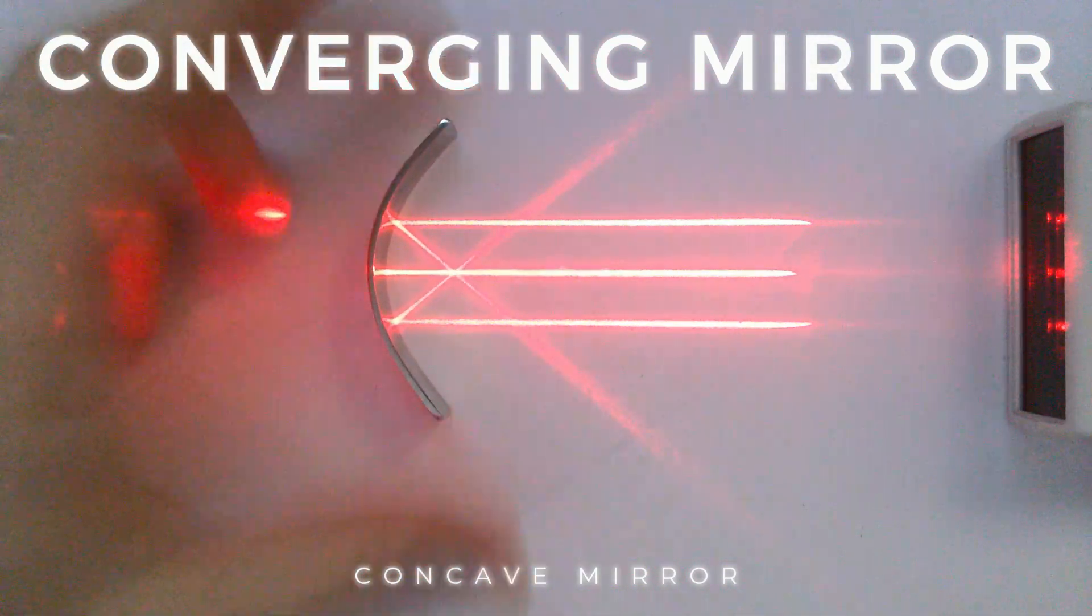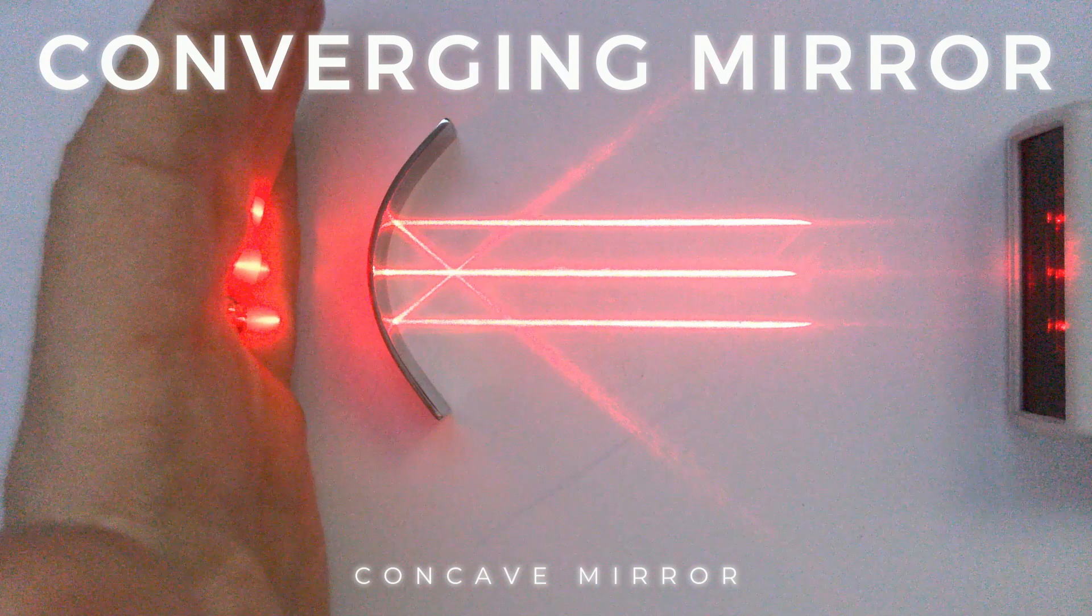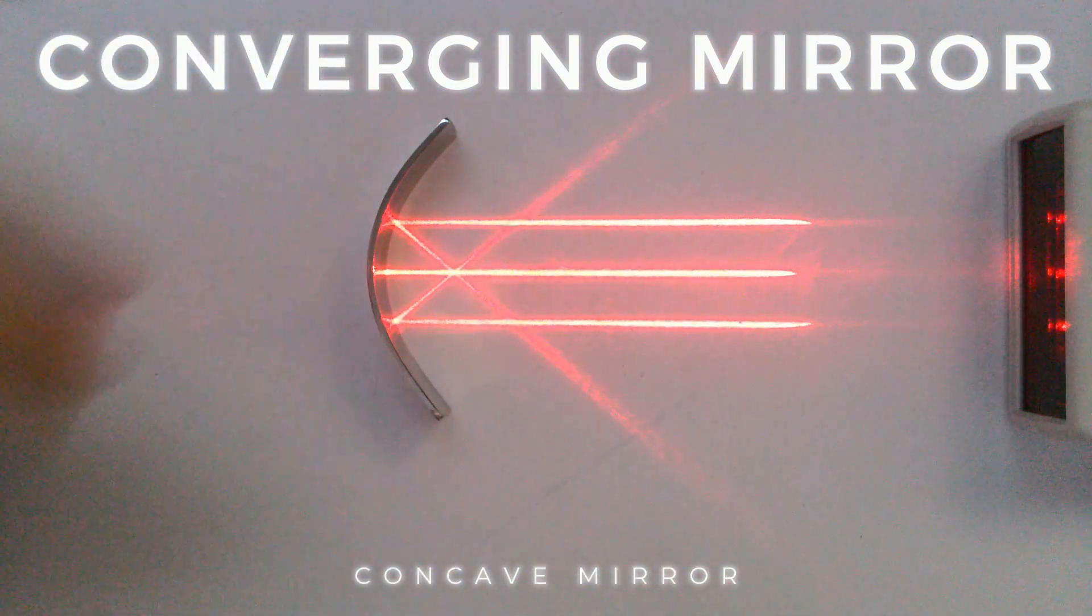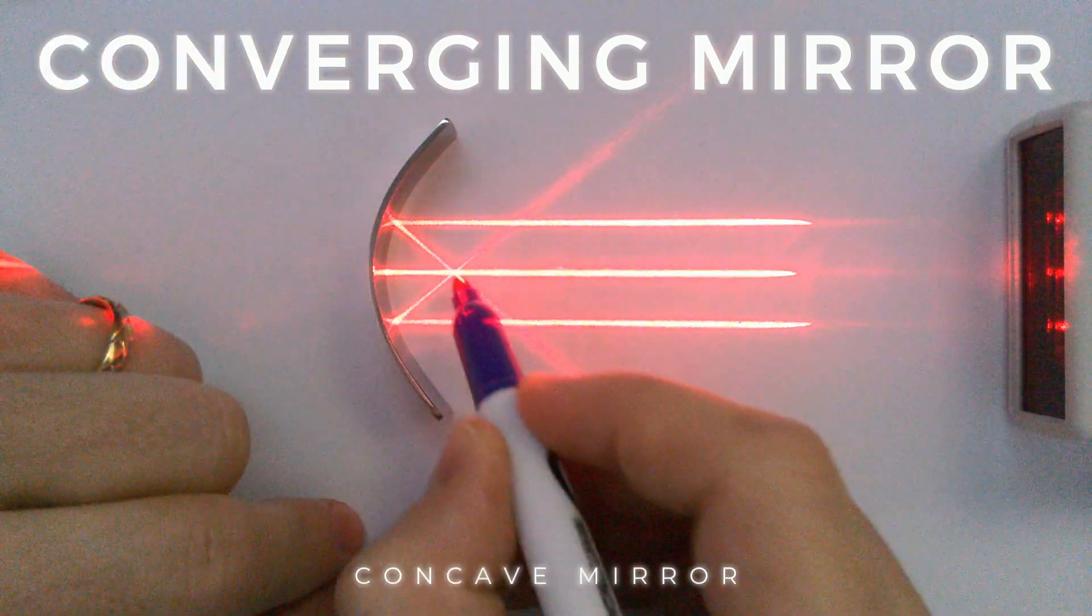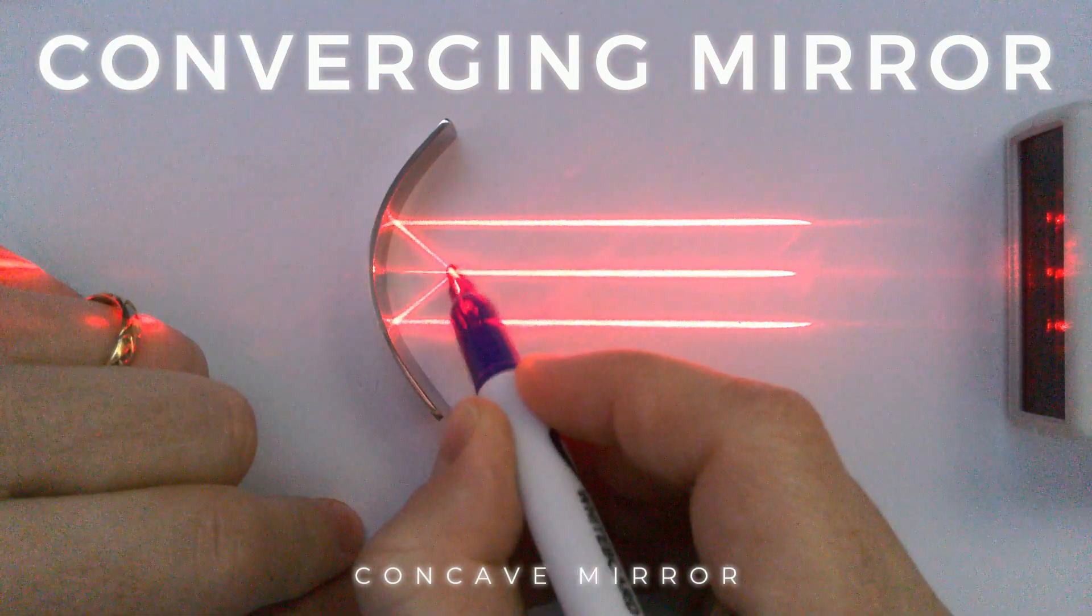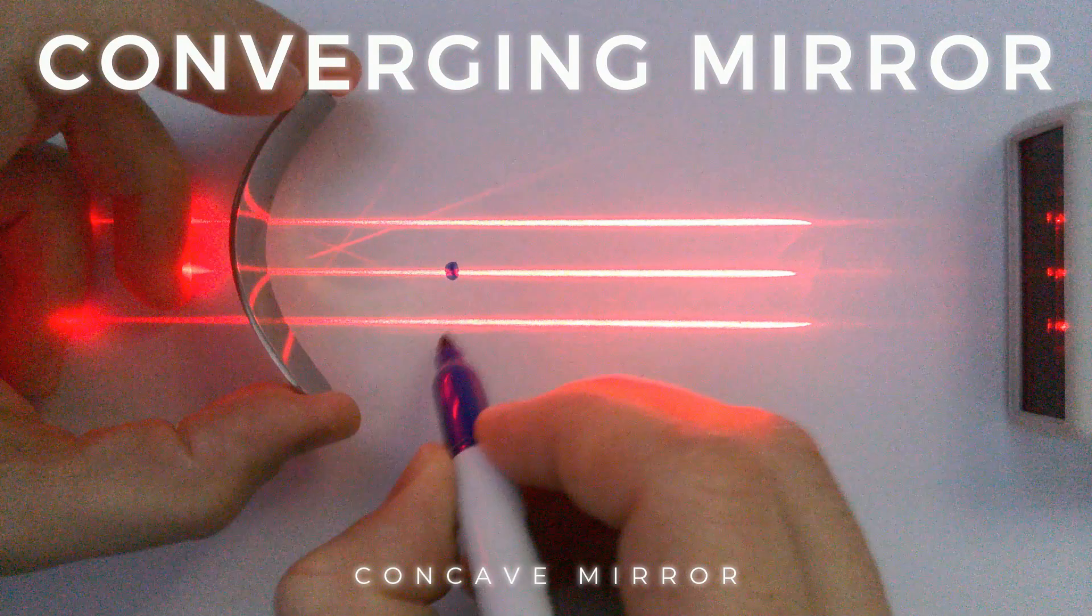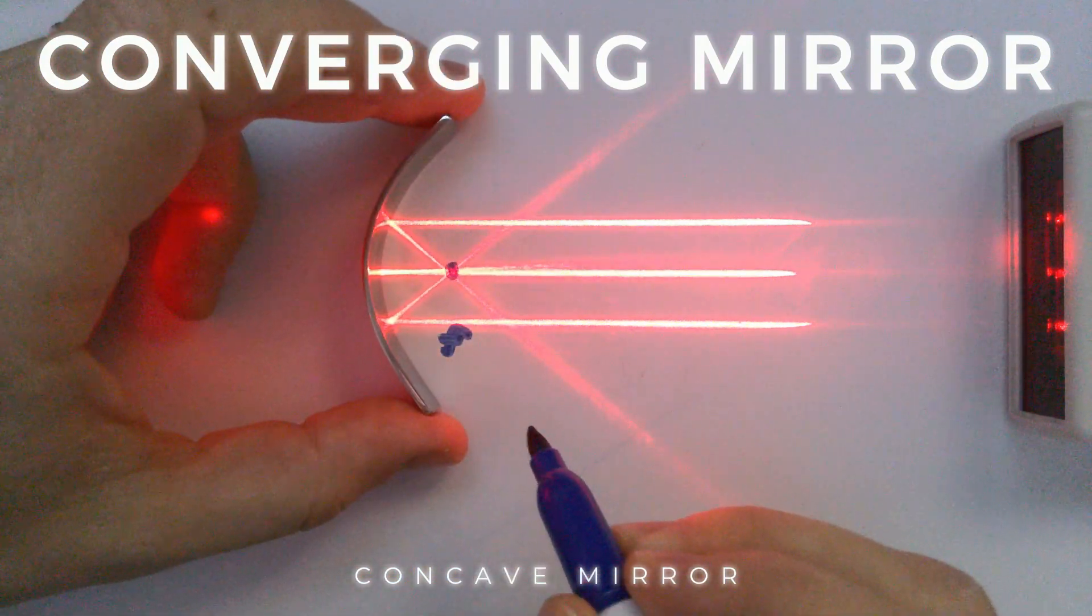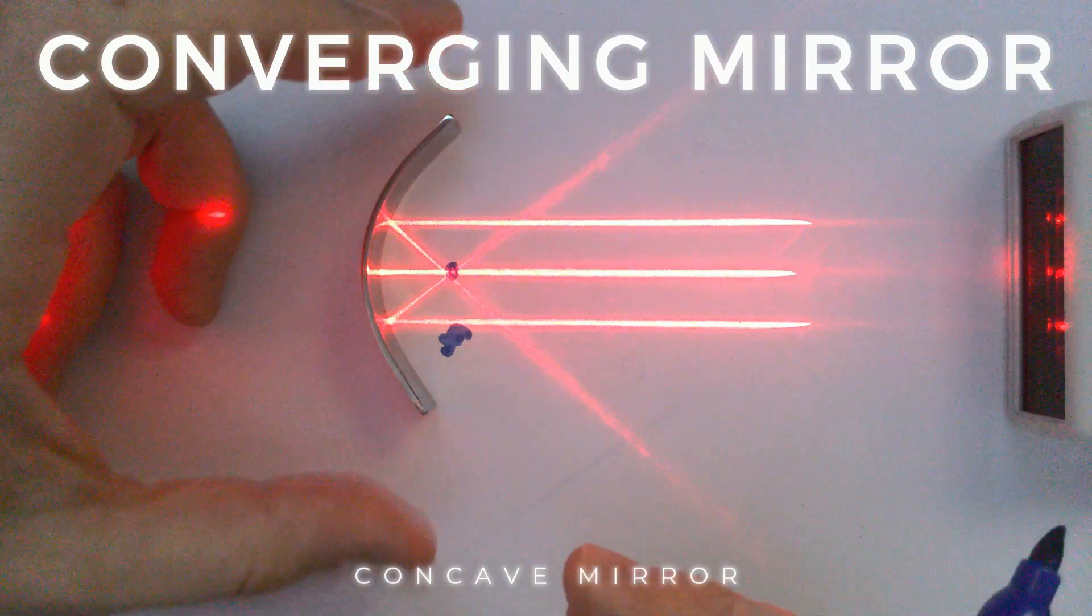But just taking this point here where it's hitting, all the rays hitting it parallel coming together, we can see that this is forming, all the light rays are meeting at one particular point, this point here. And this point is called the focal point. So the focal point for this mirror is where all the light focuses together.